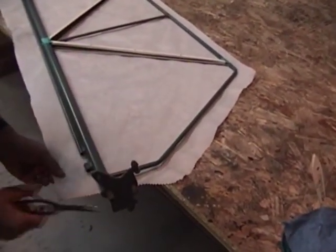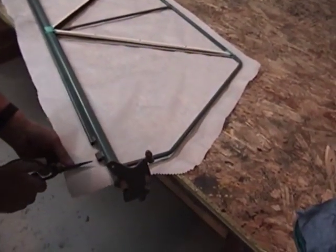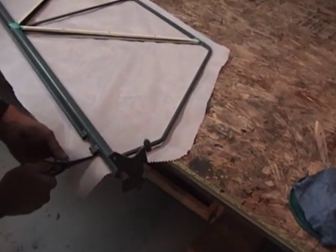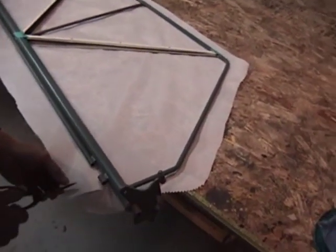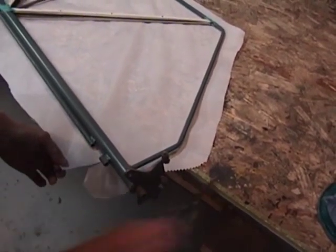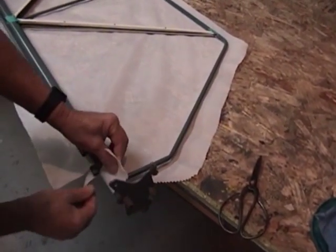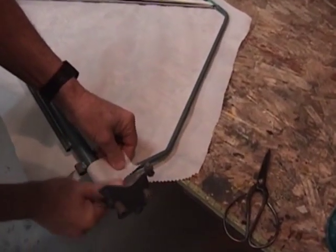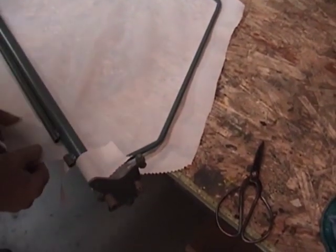First thing we're going to do is take our scissors and go ahead and notch around where the hinges are here. And once that's done, we just pull the fabric up. We're just going to rub it into that pre-dried glue just a little bit.